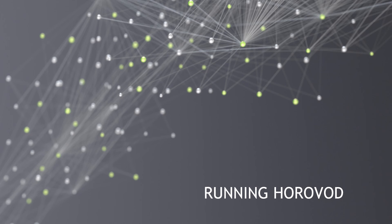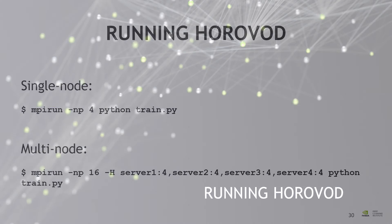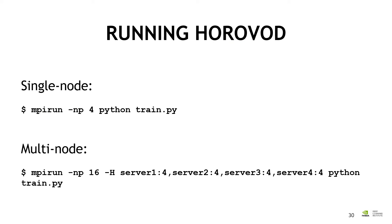Running Horovod is also very easy. You use mpirun minus NP 4 for Python train.py — this runs on four processes using four GPUs on a single node. If you go multi-node, you will have to define a server name and how many GPUs you want to use per server, finishing with Python and the name of the training script.